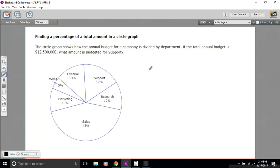The question asks, if the total annual budget is $12,500,000, what is the amount budgeted for support? And you can see support is 17%. So that means support is 17% of the whole pie here, and the whole pie is represented by this number.